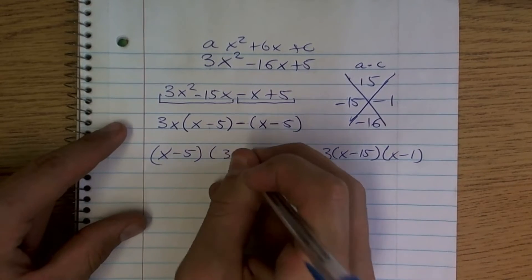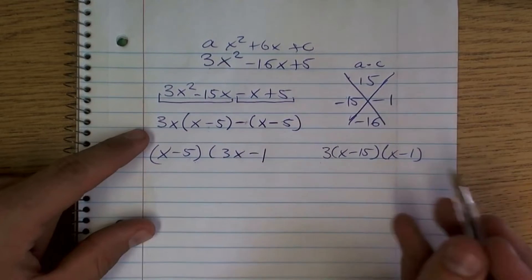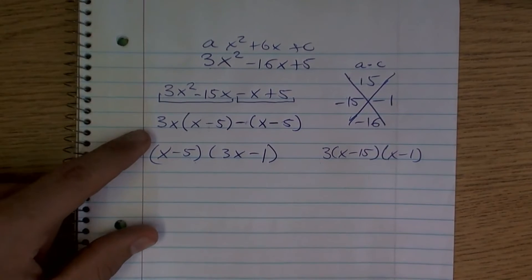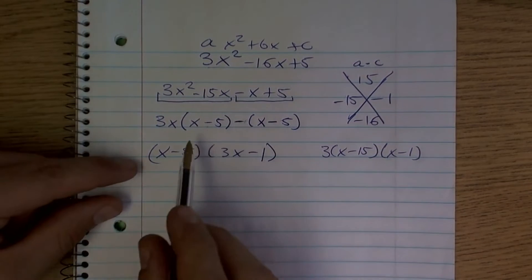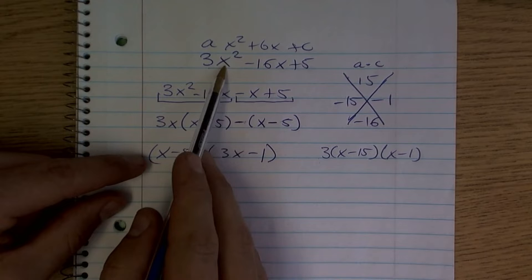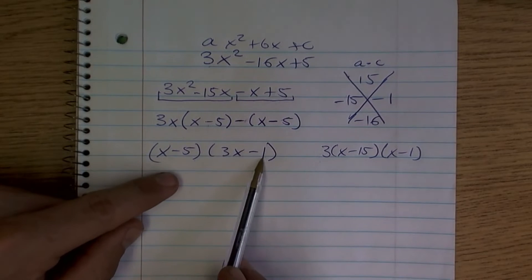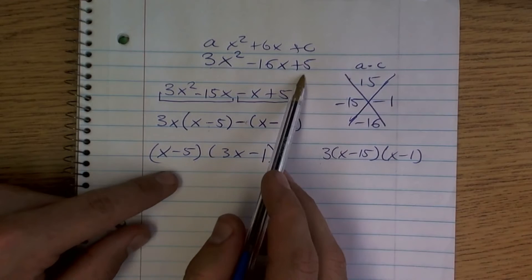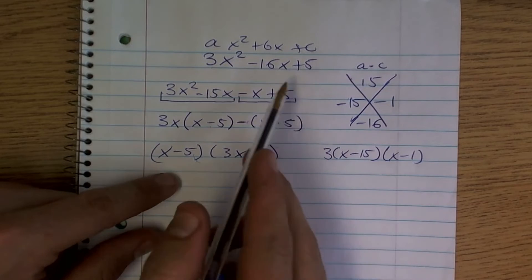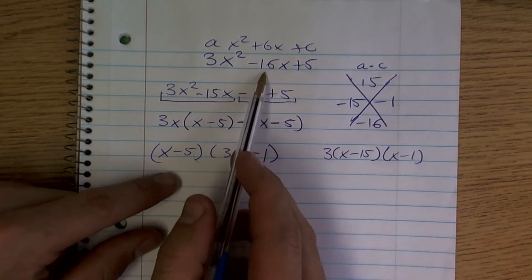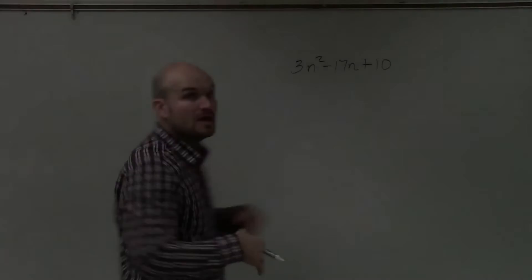Now since these two have (x − 5) in common, I can factor that out and I'll be left with (3x − 1). Double-checking: x times 3x gives 3x²; negative 5 times negative 1 gives positive 5; and the inner terms also give us negative 16. So that's pretty much it.